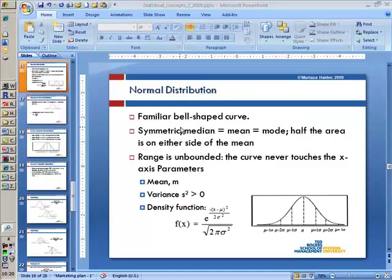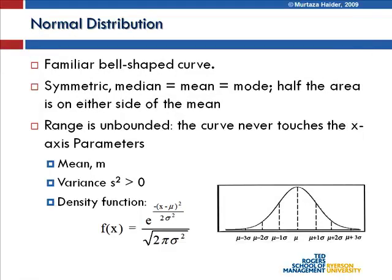Now let's consider the normal distribution — the familiar bell-shaped curve. The normal distribution is symmetric: the median equals the mean equals the mode, and half the area is on either side of the mean. The range is unbounded — the tails never touch the x-axis. The mean is represented as μ, the variance as σ², and the density function is f(x) = exp(−(x − μ)² / (2σ²)) / √(2πσ²).